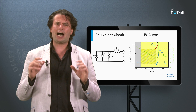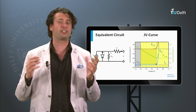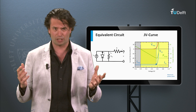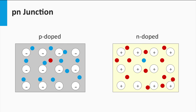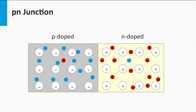Before I do that, I will quickly summarize last week's important highlights concerning the physical working principle of a solar cell. We have shown that we can dope semiconductor materials N-type and P-type. In P-type the holes are the majority charge carriers, and in N-type the electrons are the majority charge carriers. If we have semiconductors in which one part is doped P-type and another part is doped N-type, we have created a so-called P-N junction.